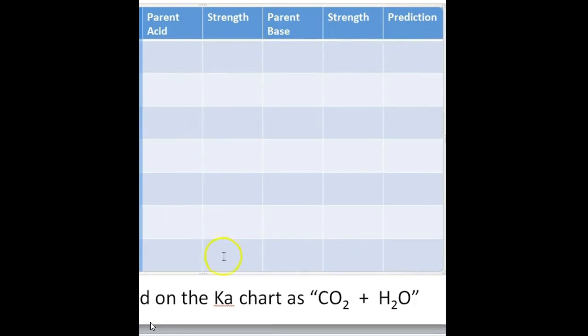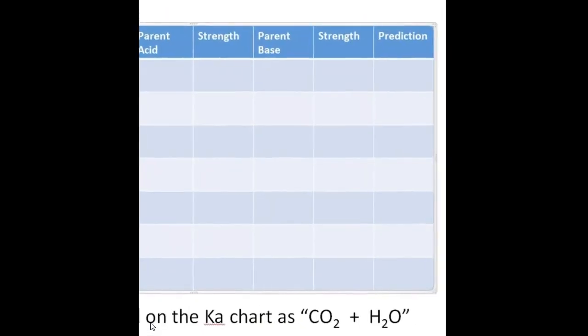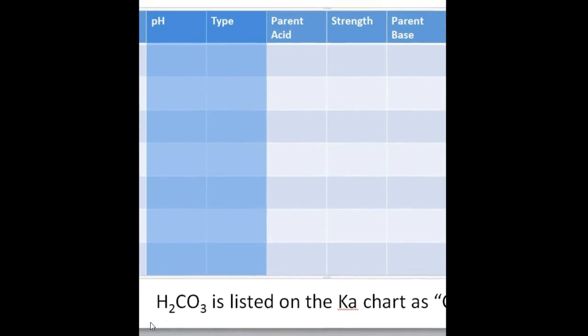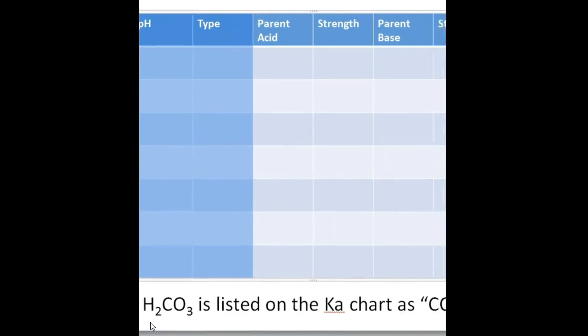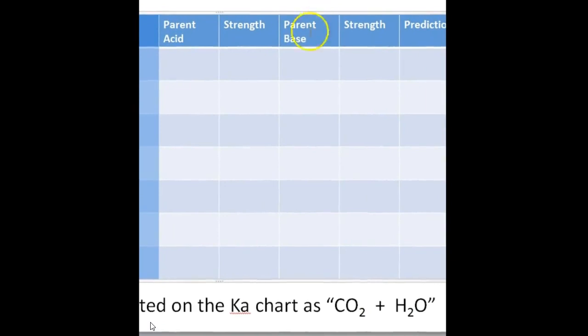Once you've done all of this, then you're going to actually test. When you test, you're going to write the pH number right here from the pH paper, and then write down whether it's acidic, basic or neutral. So this column here should match that column there. The last thing I wanted to mention, if you come up with the acid H2CO3, it's not really on the Ka chart, but it kind of is. It's listed as CO2 plus H2O. That's H2CO3.